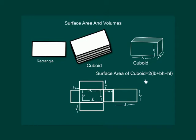Surface area of a cuboid is equal to twice the quantity: length × breadth + breadth × height + height × length.